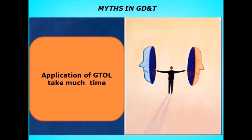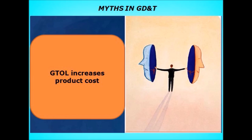The next myth is that application of GD&T takes much more time. This is absolutely incorrect — if you know geometric tolerancing and have studied the assembly properly, it can be applied alongside dimensioning while you are working on the drawing. The next myth is that GD&T increases product cost. In mass production, while GD&T slightly increases manufacturing and inspection cost, it controls rejection and thereby reduces overall production cost.